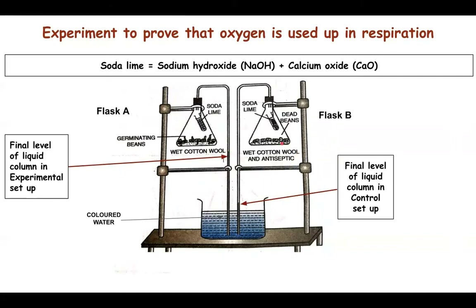In the case of flask B, the soda lime absorbs whatever carbon dioxide is present in the air in the conical flask and in the bent tube, so there is a slight increase in water level here as well. Remember, one-fifth of air is oxygen, so when oxygen is used, that much carbon dioxide is formed, giving a considerable rise in the water level in flask A. In flask B, only a slight rise occurs because only 0.04 percent of air is carbon dioxide. This experiment clearly proves that oxygen is used up in respiration.